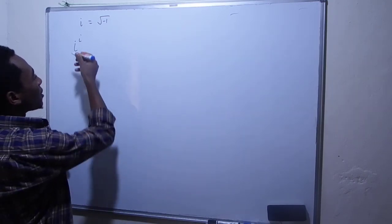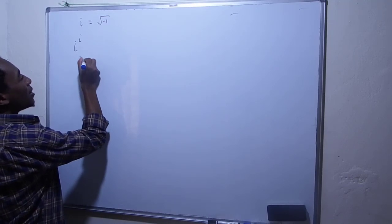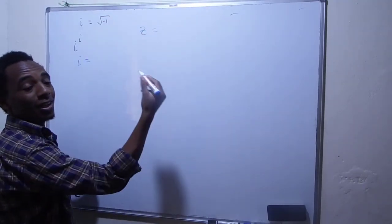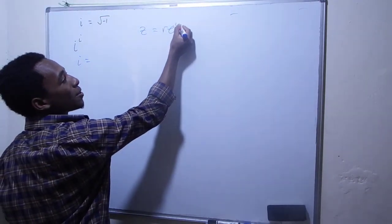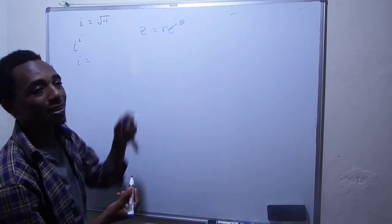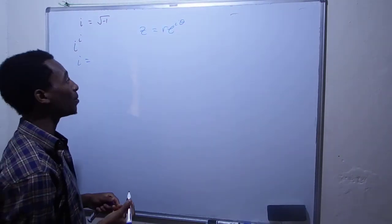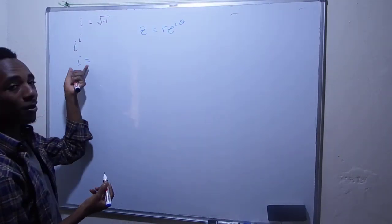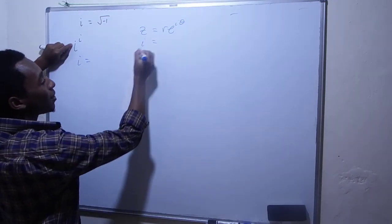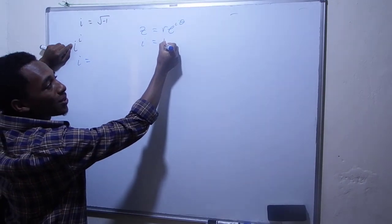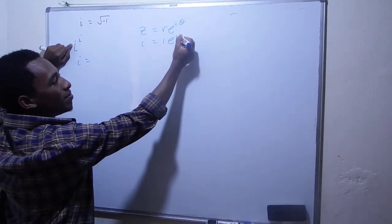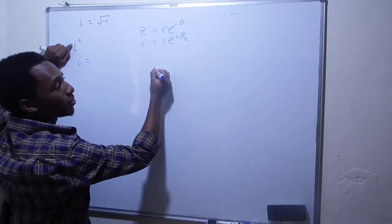So let me go ahead and do that. A complex number z in exponential form is written as r times e to the i theta, where r is the modulus and theta is the argument. For i as a complex number, the modulus is 1 and the argument is 90 degrees or π/2 radians.